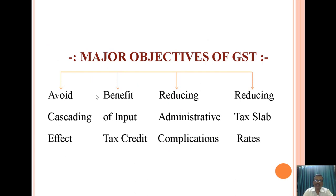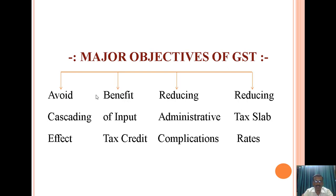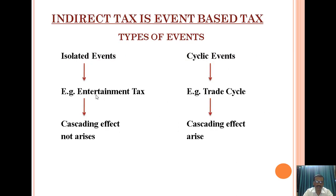Look at this slide. There are various objectives of GST, but the major objectives are: to avoid cascading effect, benefit of input tax credit, reducing administrative complications, and reducing the slab rates. Out of these objectives, we will focus on the objective of avoiding the cascading effect.